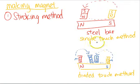The divided touch and the single touch method use the same way of determining where the north pole and south pole are for the created magnet. This is known as the stroking method.